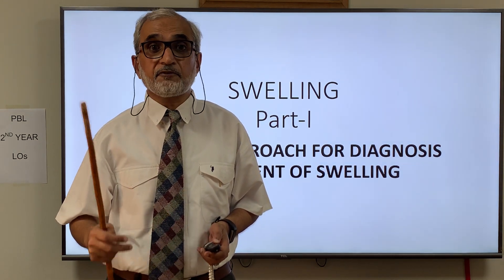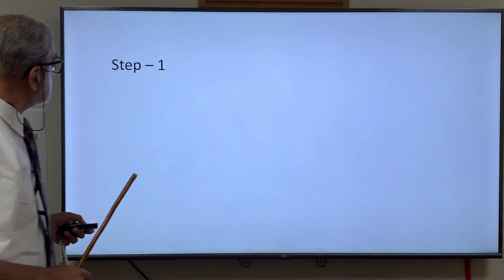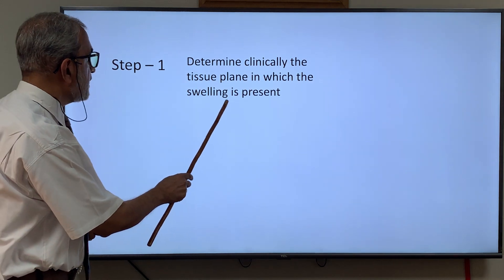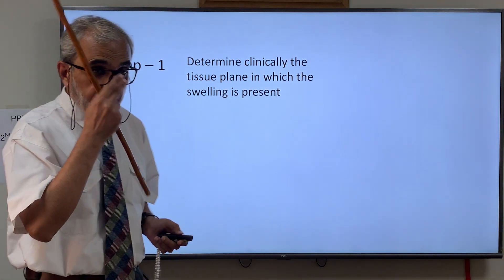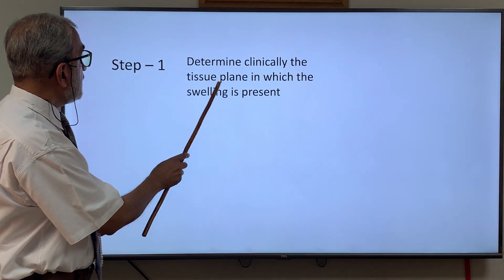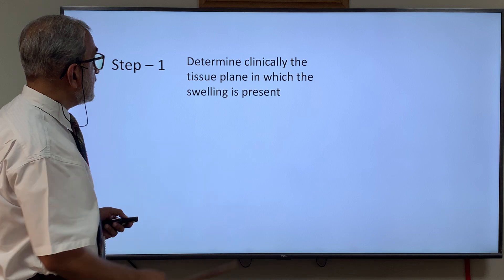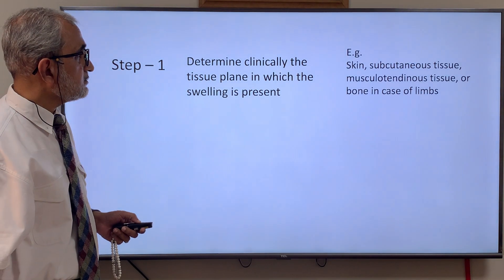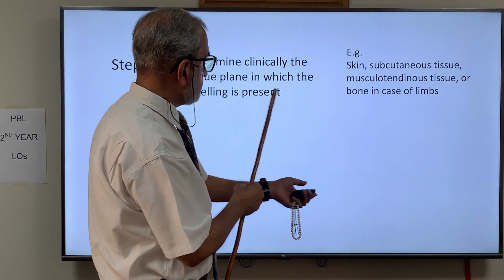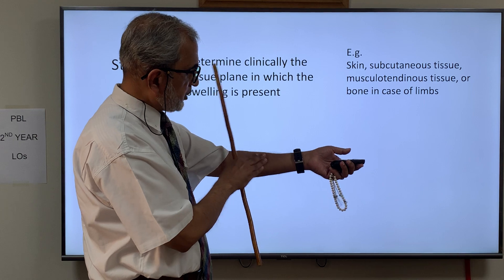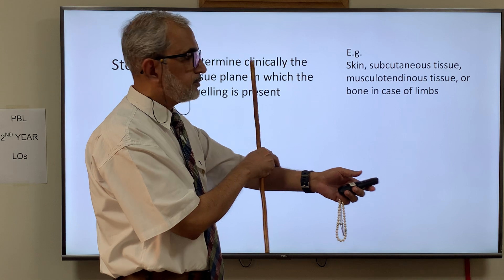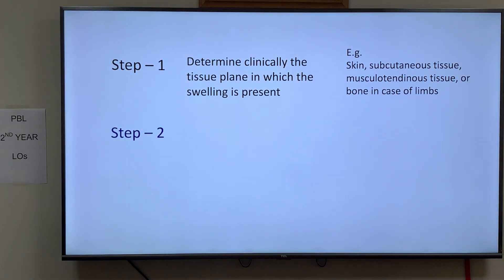Step one is to determine clinically the tissue plane in which the swelling is present. By the end of the clinical examination, one should be sure of which tissue plane the swelling is present in. For example, if you talk about limbs, the swelling could be present in skin, subcutaneous tissue, muscle, or bone.